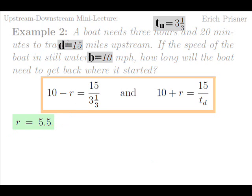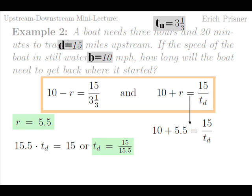Plugging this into the second equation we get ten plus five point five equals fifteen over td. Or fifteen point five times td equals fifteen. Or td equals fifteen divided by fifteen point five, a little less than one hour.